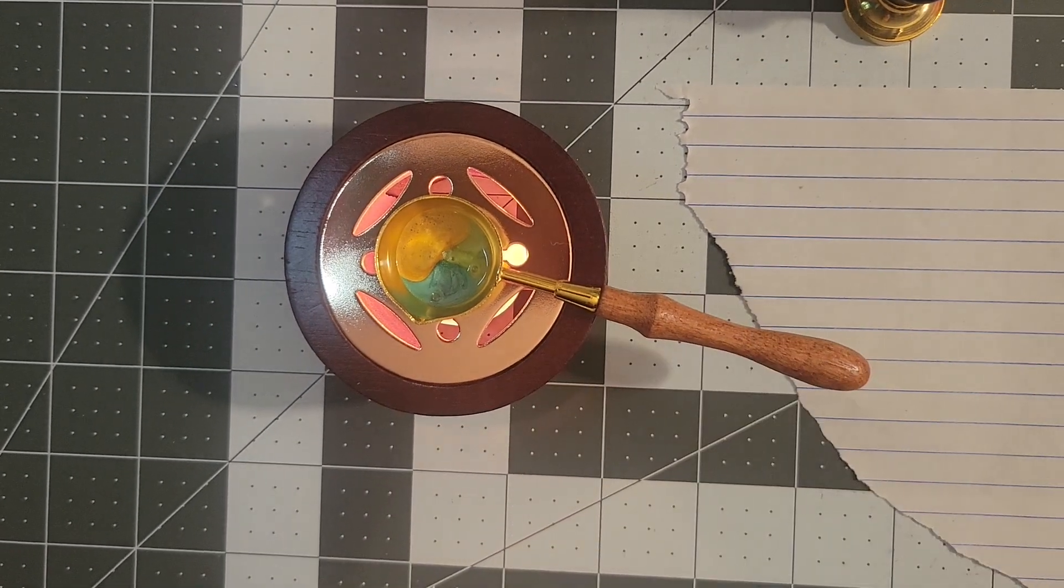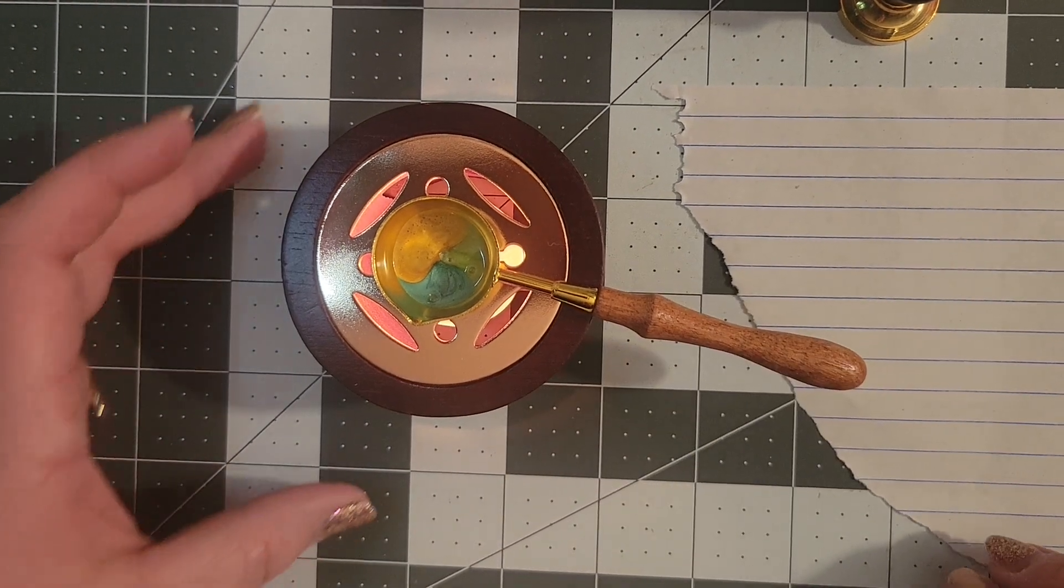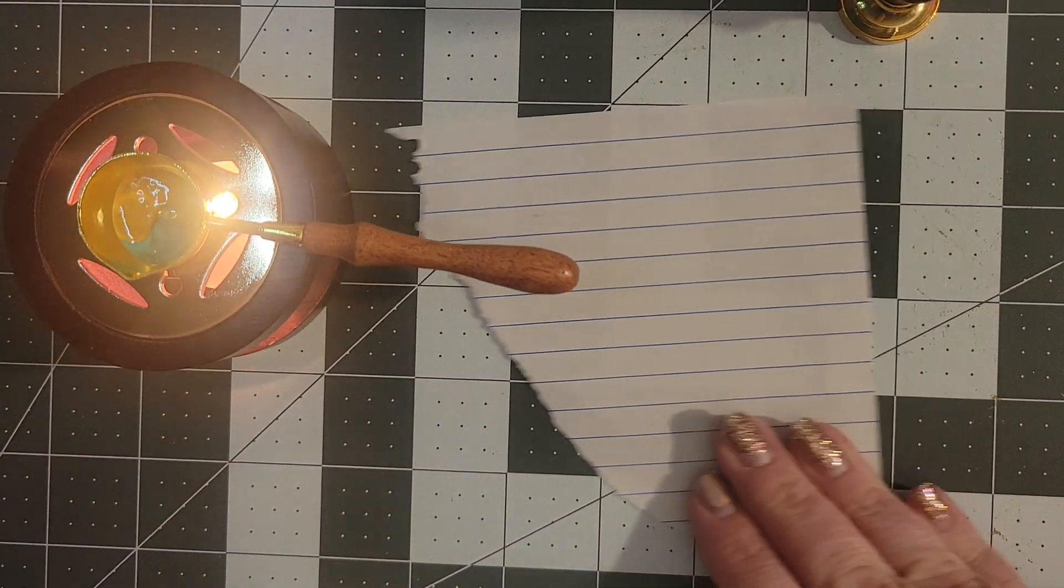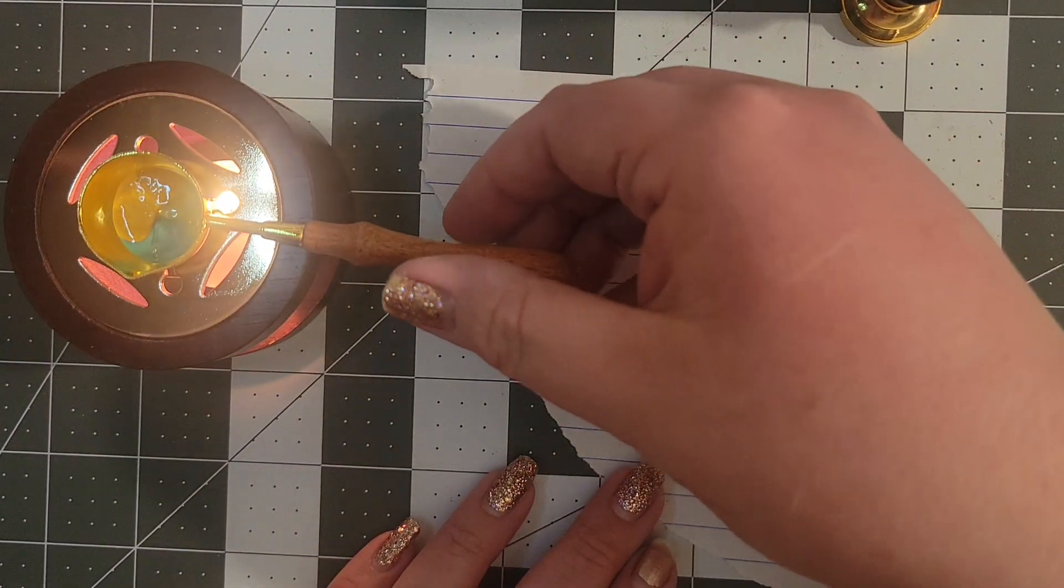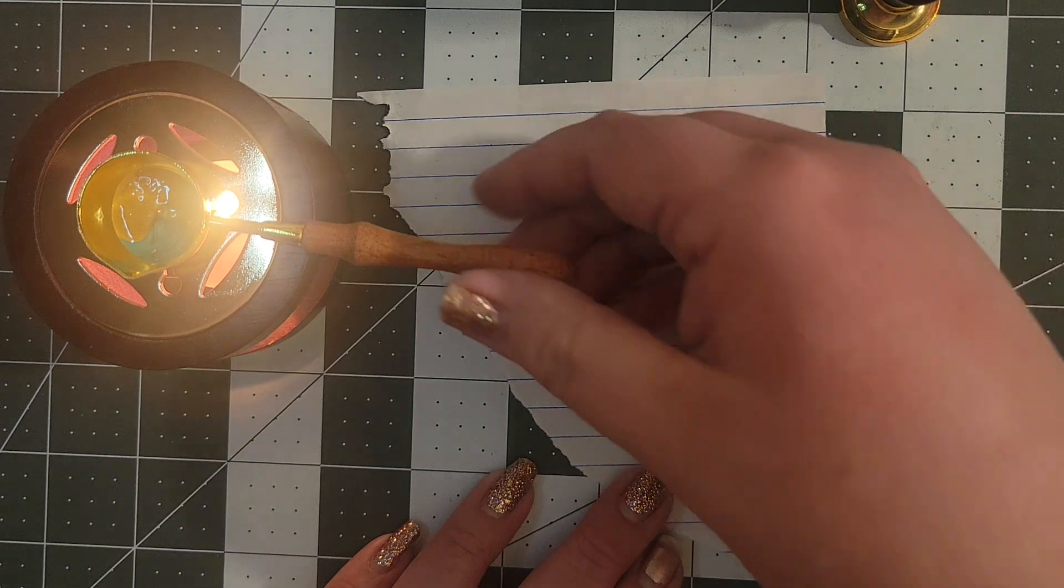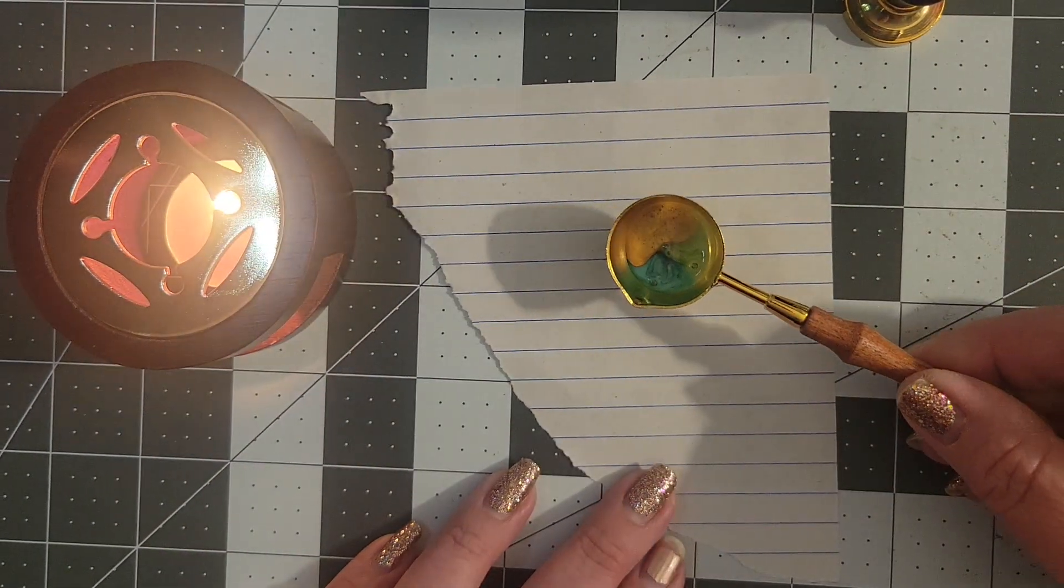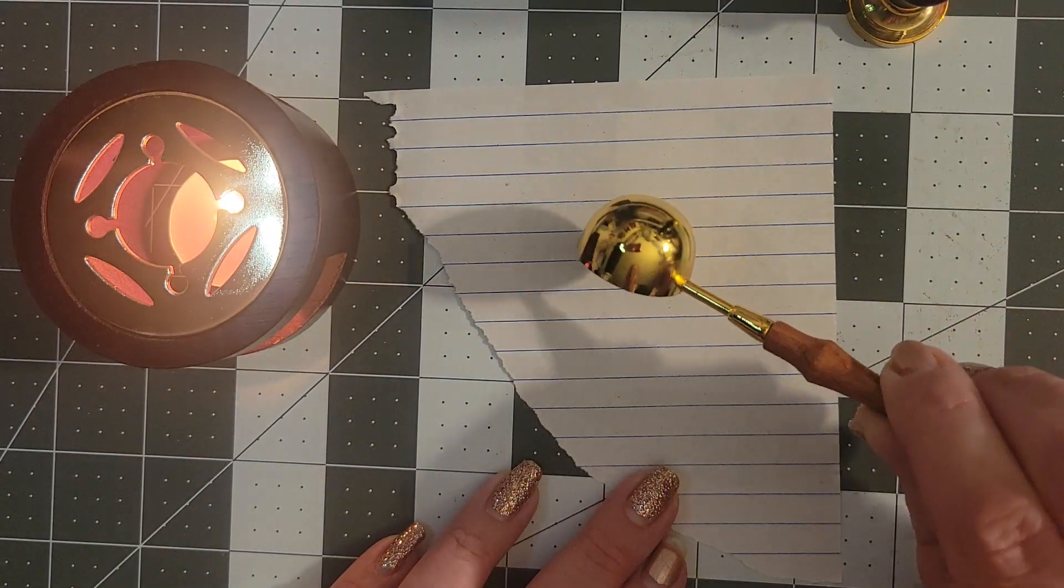Alright, so we are back now and it does look like it is melted. So I'm going to move this to the side a little. Paper here. You can definitely smell the wax, so there is a scent to this, that's for sure. Alright, so then you just pour it on the paper.